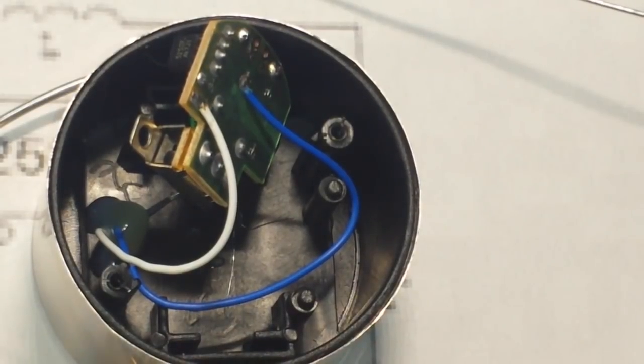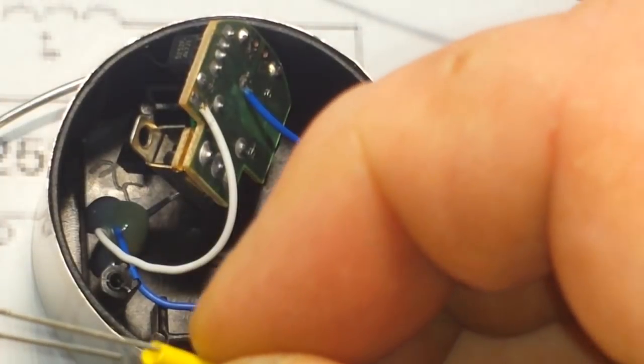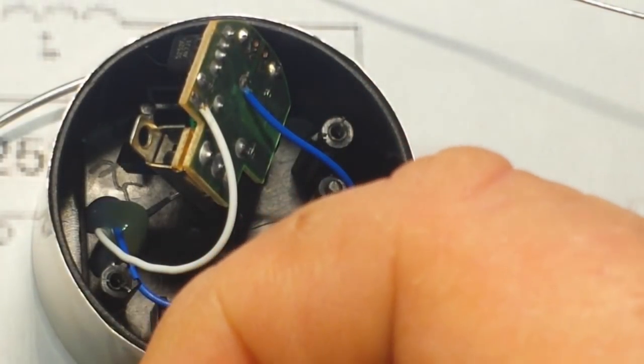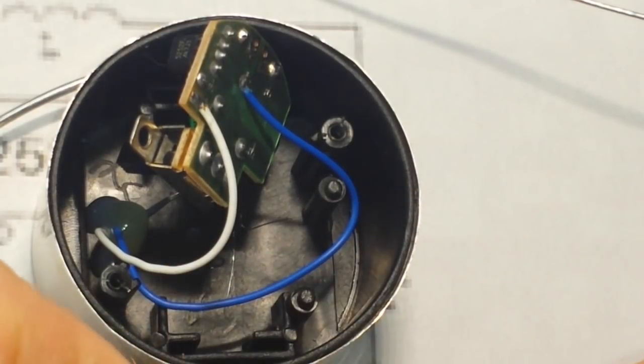Alright. We got it all nice and desoldered. Got our yellow LED here. And I've cut some of the smallest heat shrink that I have. Because that's what they used. With some heat shrink.